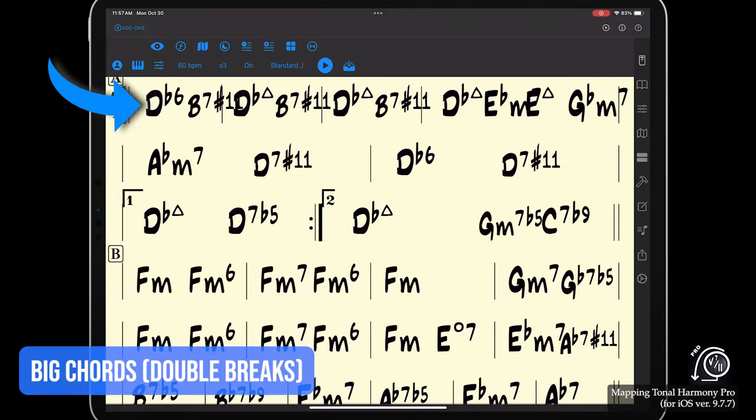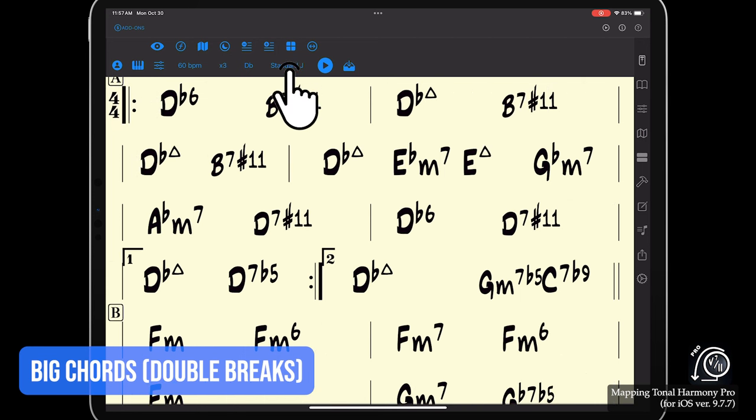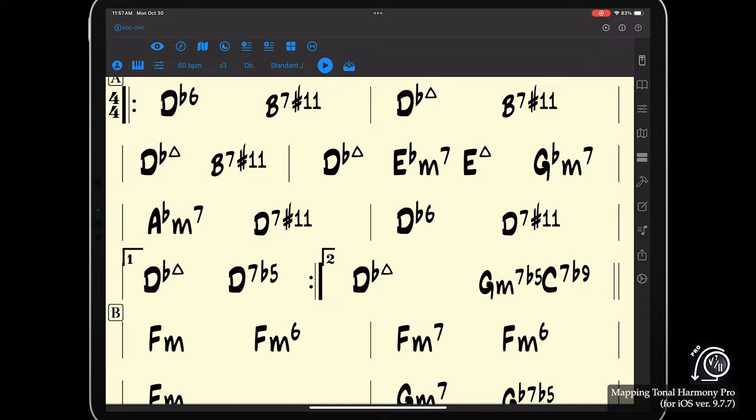Also if the current song has a lot of chords per measure, like for example Lush Life, and you want to use the big chords template, you can toggle between single or double system breaks with the split systems button here so that the chords fit comfortably on the staff.